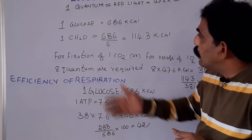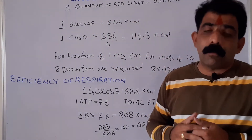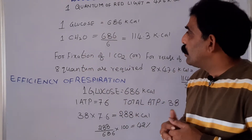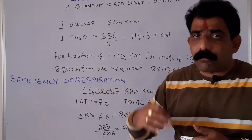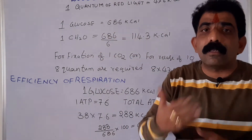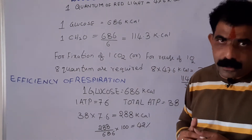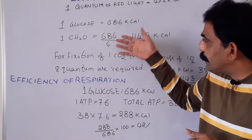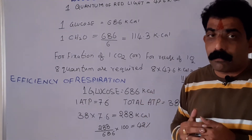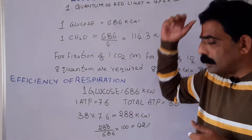A glucose molecule consists of 686 kcal of energy. Each carbon consists of how much energy? Glucose consists of a 6-carbon skeleton. To get the potential energy content of one carbon in the glucose molecule, we divide the total energy content of the glucose molecule by 6. So 1 CH₂ = 686 ÷ 6 = 114.3 kcal. Thus 114.3 kcal of potential energy is present in each carbon, and all 6 carbons together make up 686 kcal of energy.